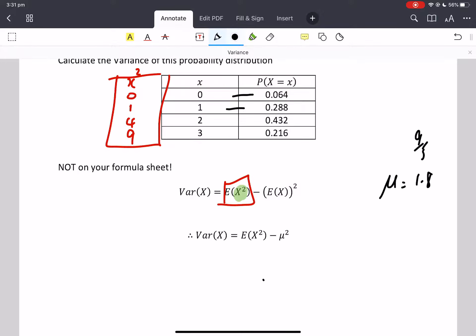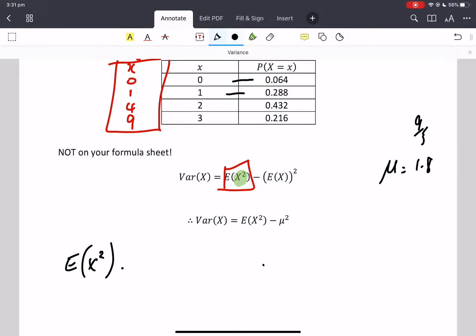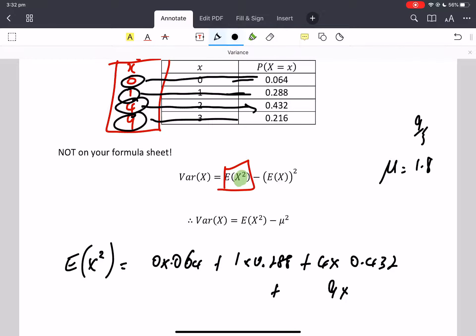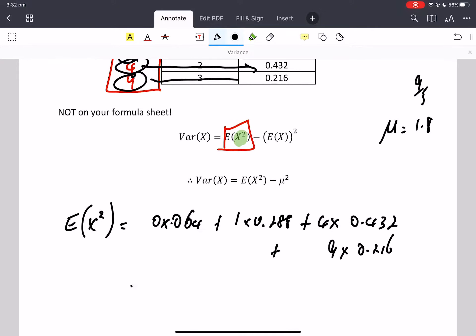So that when we calculate E of x squared, it's going to be 0 times 0.064, 0 times 0.064, plus 1 times that decimal is right in the right place, plus 4 times, plus 9 times. There's no chance we can do that without a calculator and we're going to get E of x squared equal to 3.96.